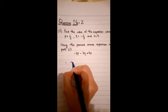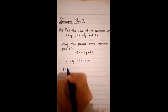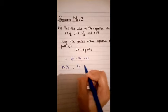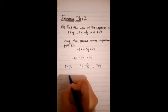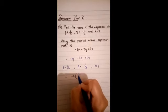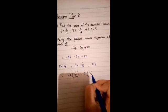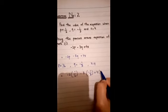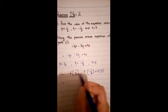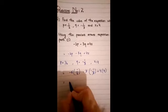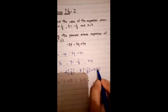Minus 2p minus 3q plus 4r. The value will be 1 over 2. q is equal to minus 1 over 3 and r is equal to 4. So minus 2 times 1 over 2 minus 3 times minus 1 over 3 plus 4 times 4. That will be going to cut 2, 2, minus 3 times minus 1, that will be minus and minus 1.